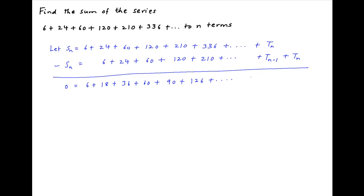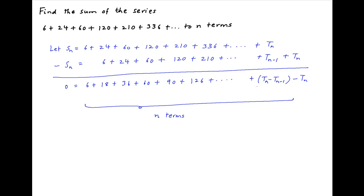The nth term on the right hand side is equal to Tn minus Tn minus 1, and the last term is minus Tn. Now let's denote this nth term Tn minus Tn minus 1 by Un. This expression can be rearranged as Tn is equal to 6 plus 18 plus 36 plus 60 plus 90 plus 126 plus and so on till Un.